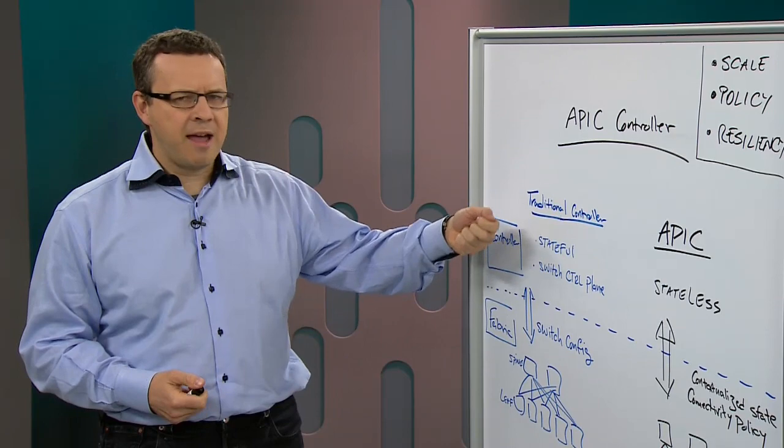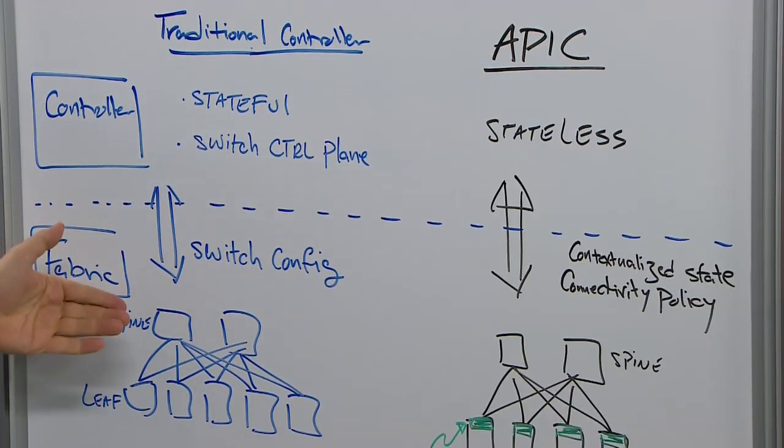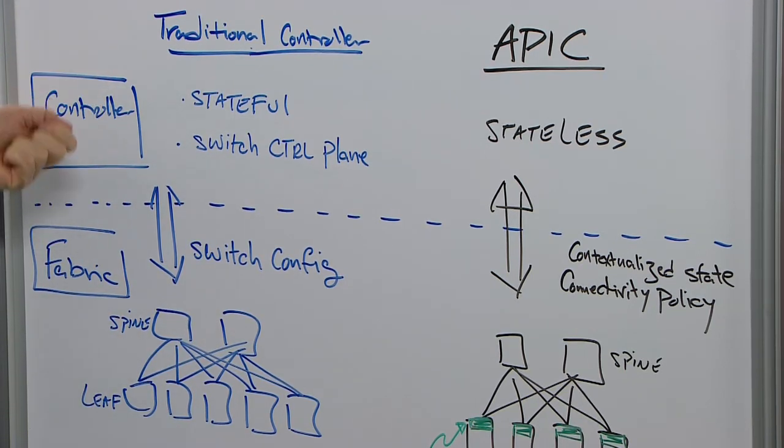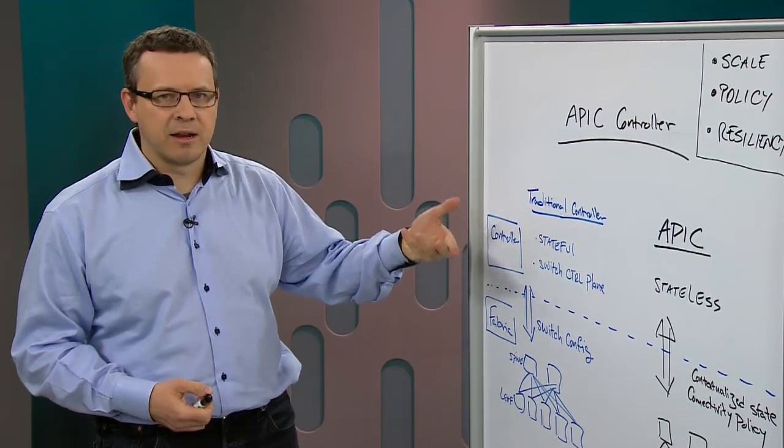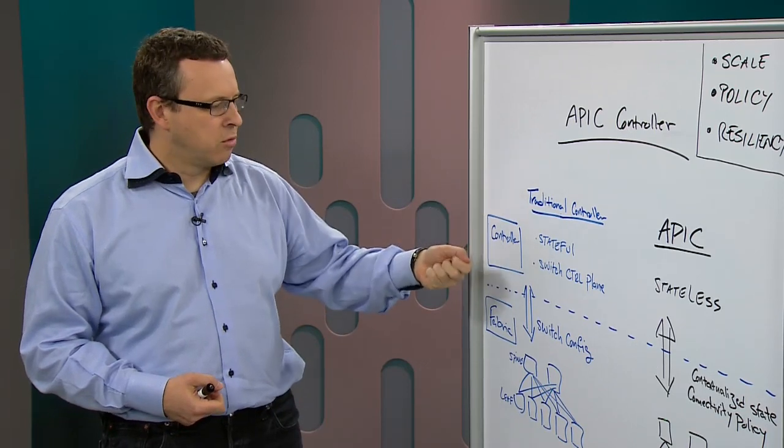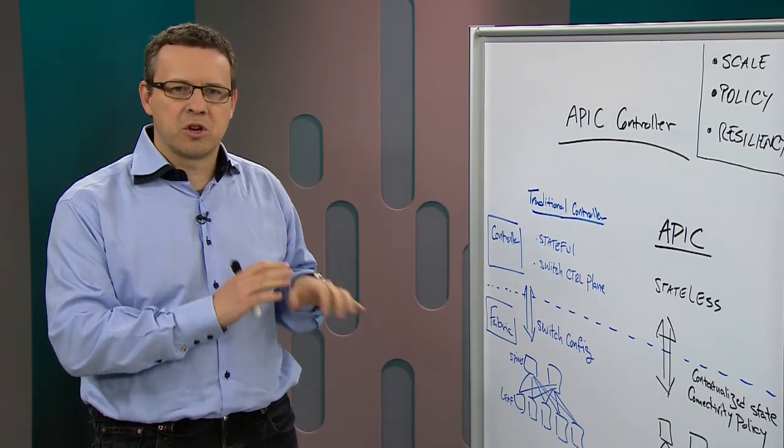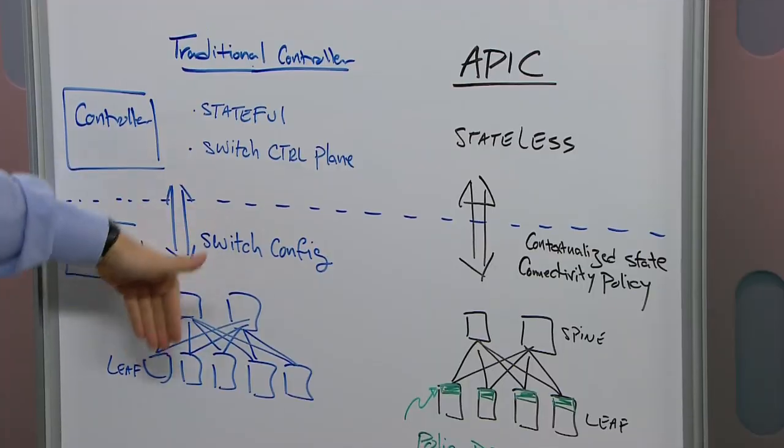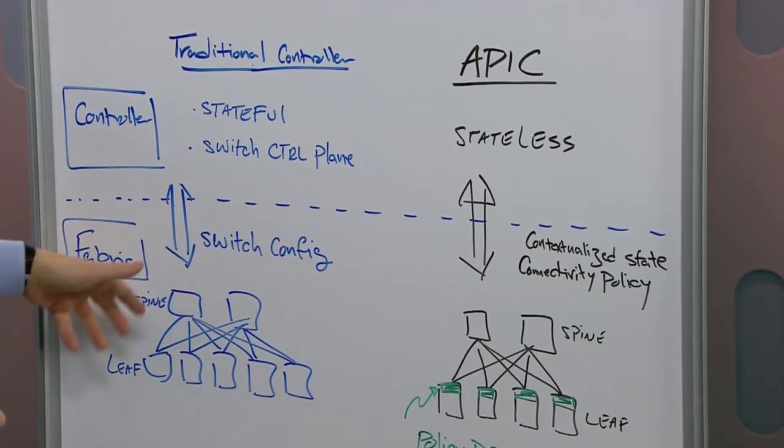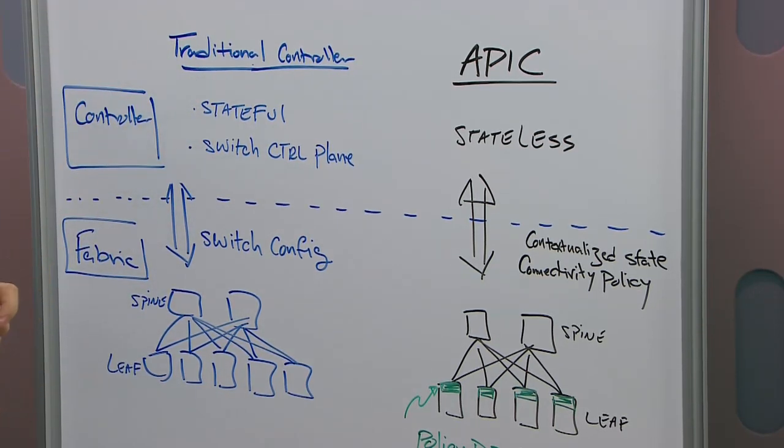The controller manages the configurations and is the central point for all these different switches in your fabric. They tend to be stateful. What that means is if you have to reconfigure your fabric, your controller is doing the heavy lifting, translating what you want to change into what has to happen in terms of switch configuration changes, and then pushes down the configs to the different switches. If you have some events going on, the events come back into the controller as an aggregation point for that as well.